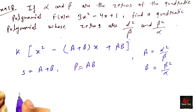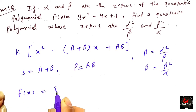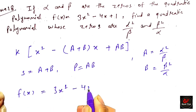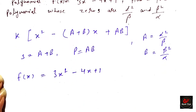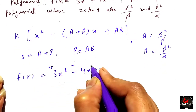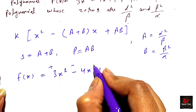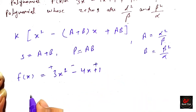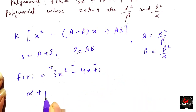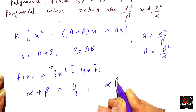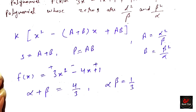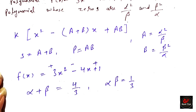The given function is 3x squared minus 4x plus 1. We need to find the sum of zeros and product of zeros. Using the formula, alpha plus beta equals 4 over 3, and alpha times beta equals 1 over 3.